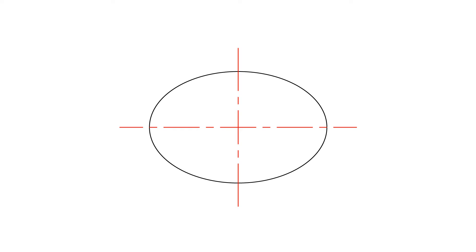First off, we need an ellipse. We will use an ellipse with a major axis of 120 mm and a minor axis of 80 mm for this example.